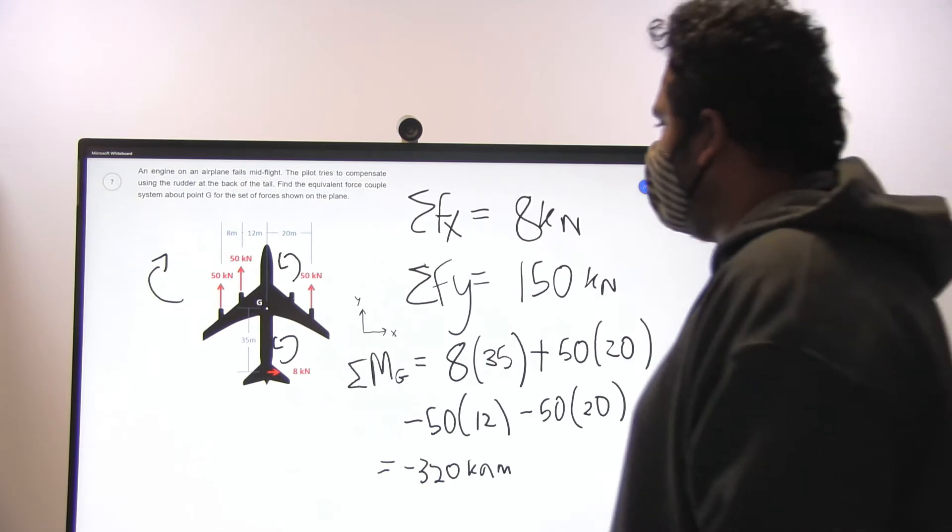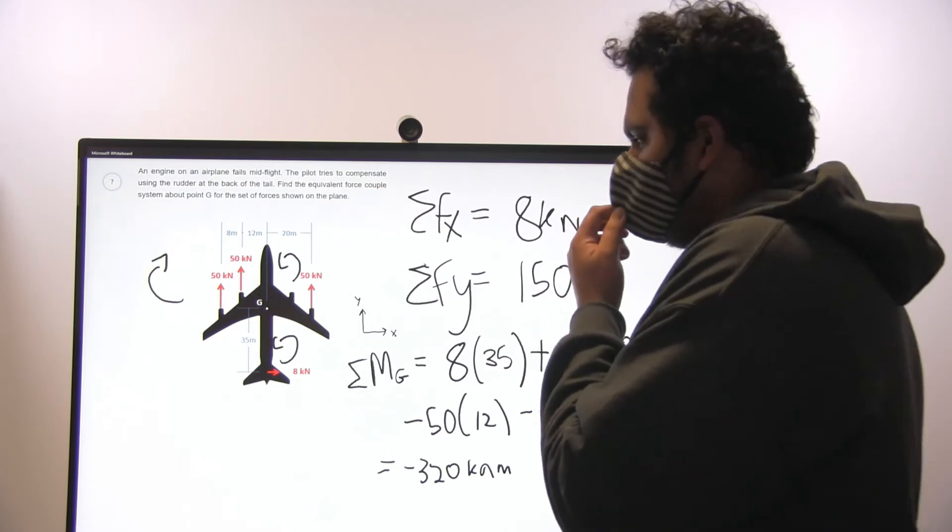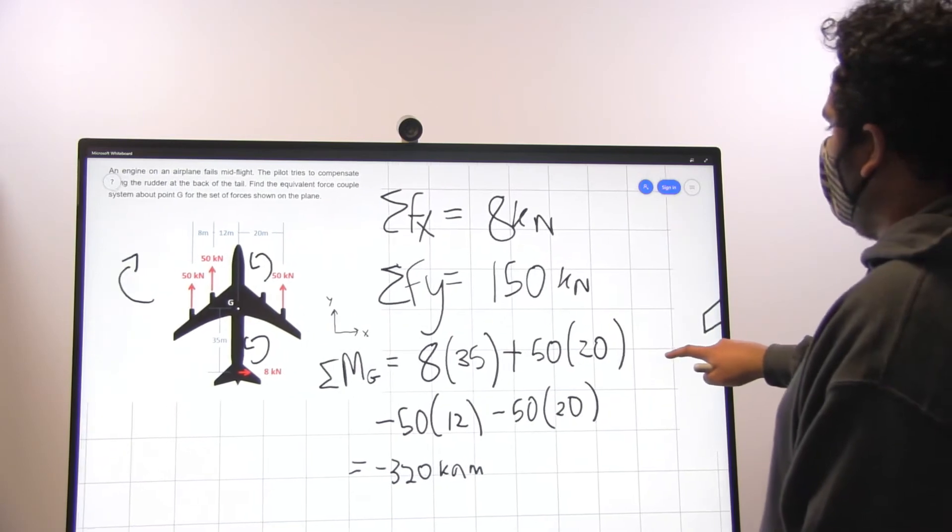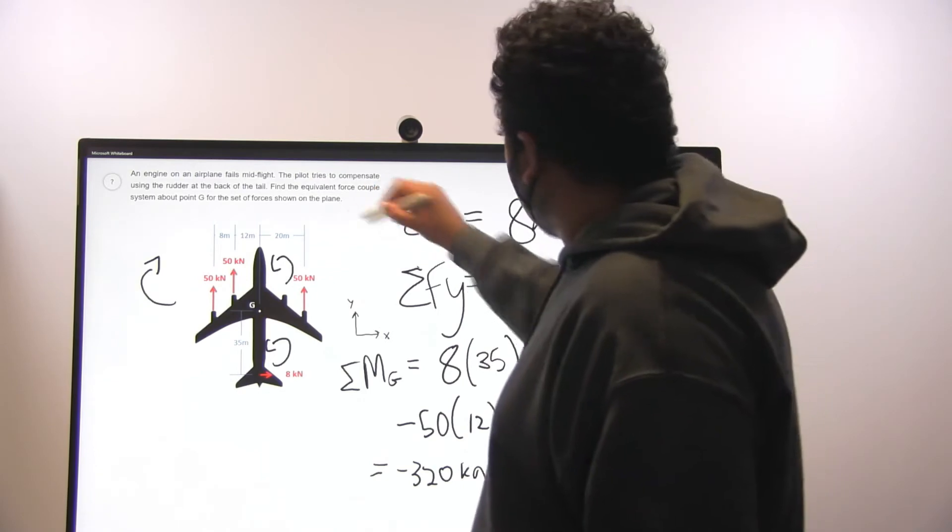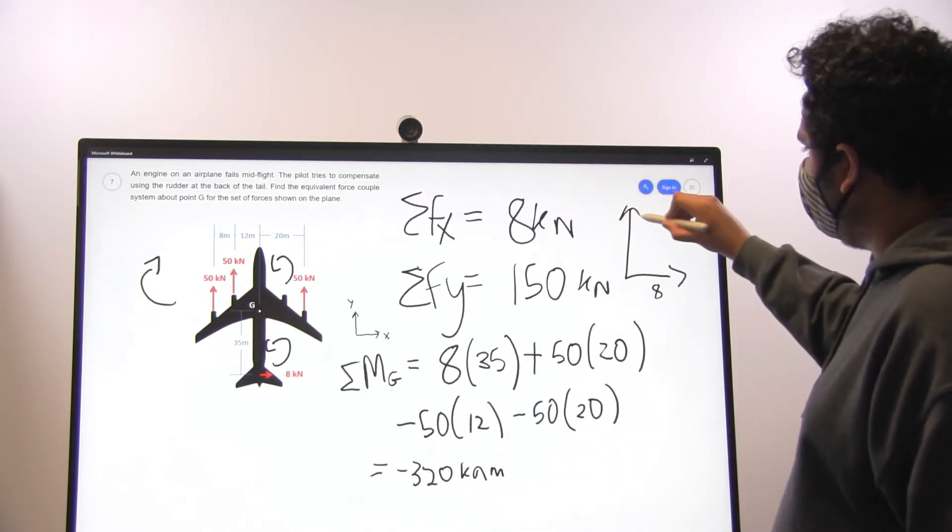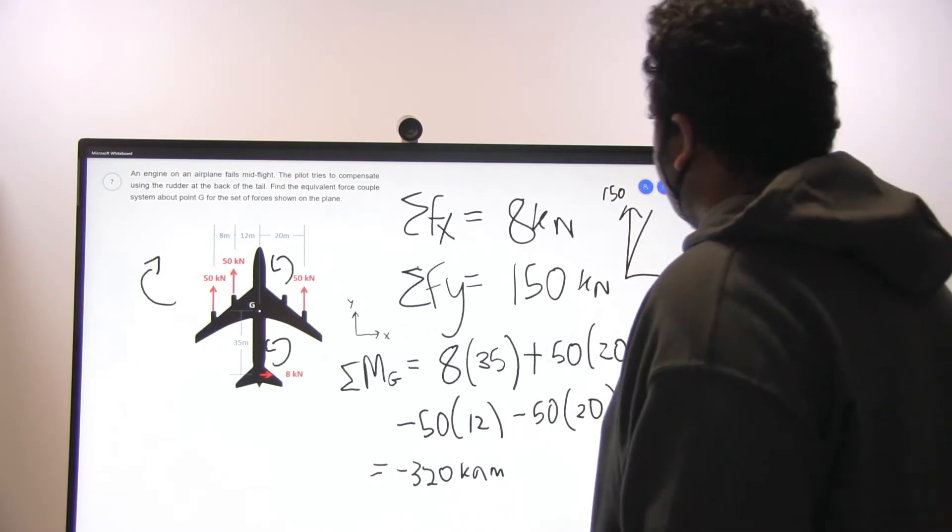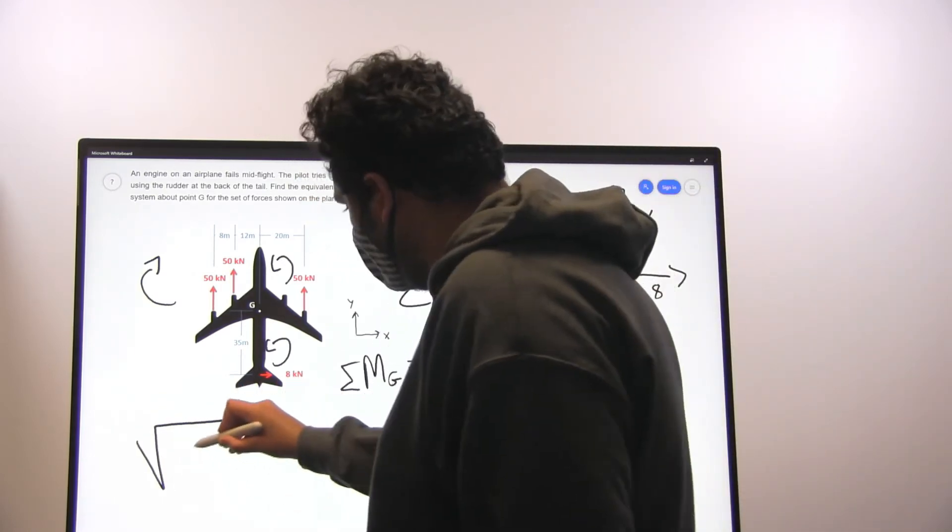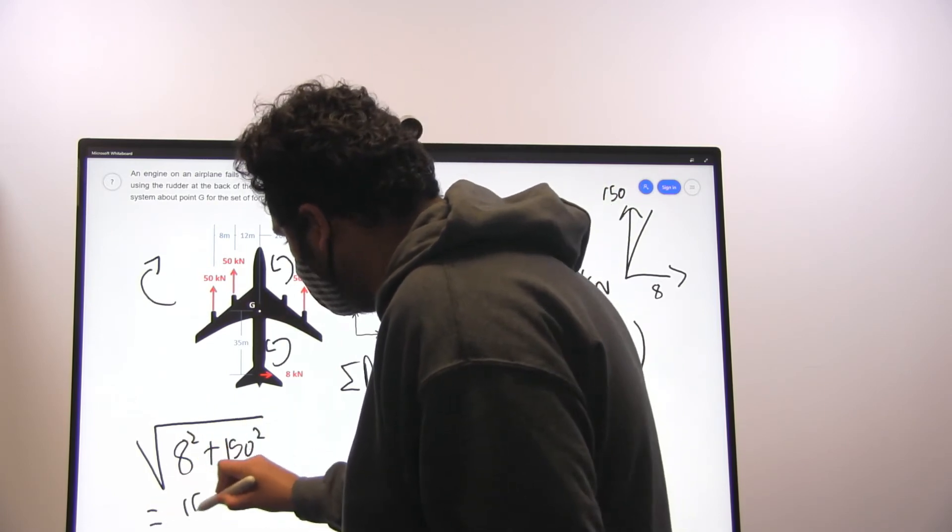Next we can find what angle the plane is going to rotate in and with what force. We use Fx and Fy, so this x direction is 8 and this y direction is 150. To find this we can use Pythagorean theorem, and it's going to be square root of 8 squared plus 150 squared, which equals 150.21.